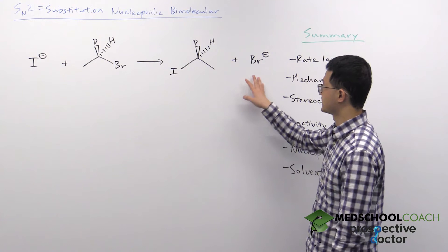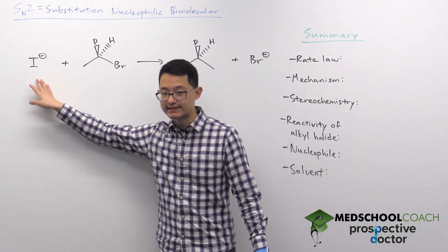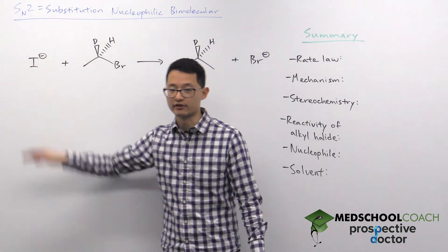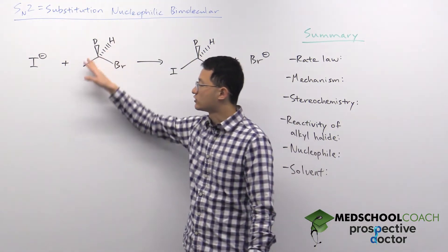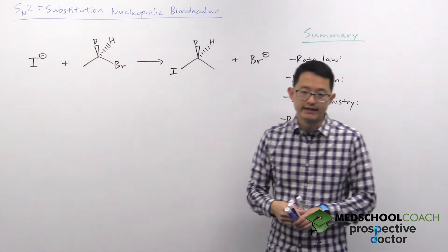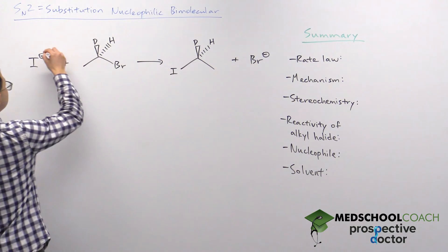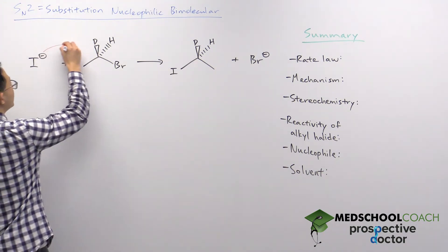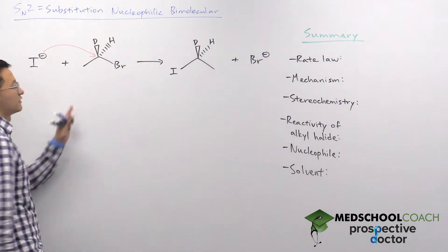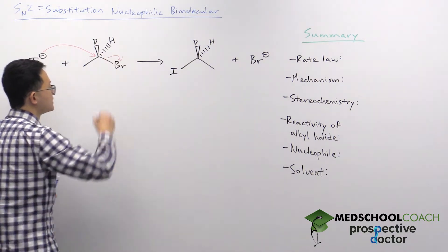Let's take a look at an example. We've got I minus with a negative charge, so that's our nucleophile. We've got our electrophile right here, our alkyl halide. In SN2 reactions our nucleophile is going to attack our electrophile, and actually at the same time that our nucleophile is making its attack, the leaving group is going to leave.